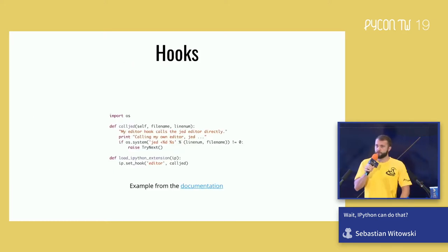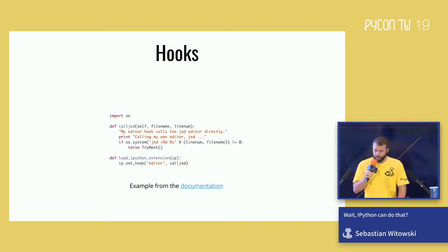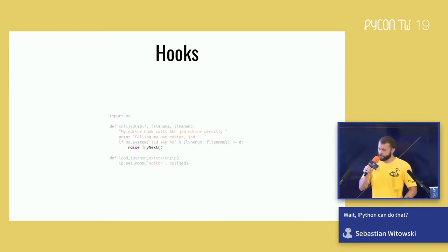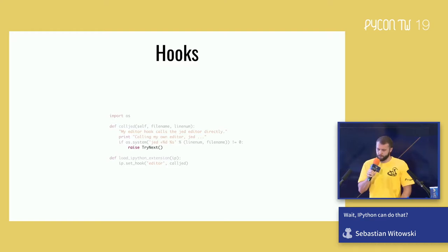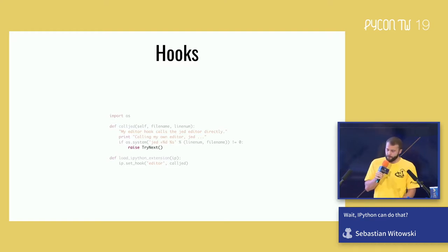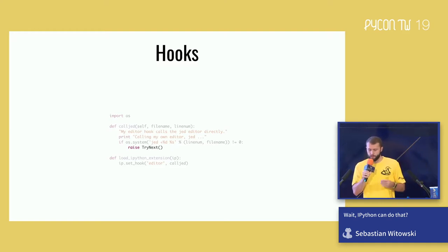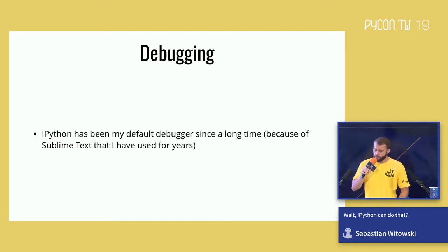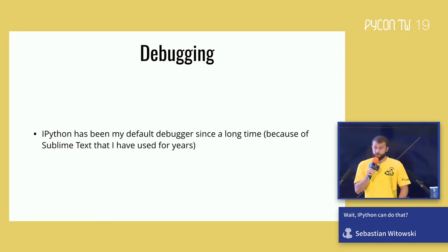For example, you can create your own function that runs when the editor is opened. This function will try to use the JetBrains editor instead of the default one. If there's an error with the JetBrains editor, it throws the `TryNext` exception, and that way IPython knows it should try to open another editor instead of failing.